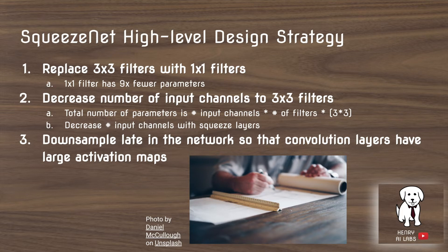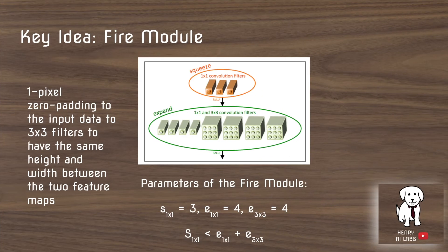They also want to downsample late in the network, reasoning that convolutional networks have more semantic information with spatially larger activation maps. So they want the height and width of each feature map to be larger early in the network, which is explicitly done with the Fire module.